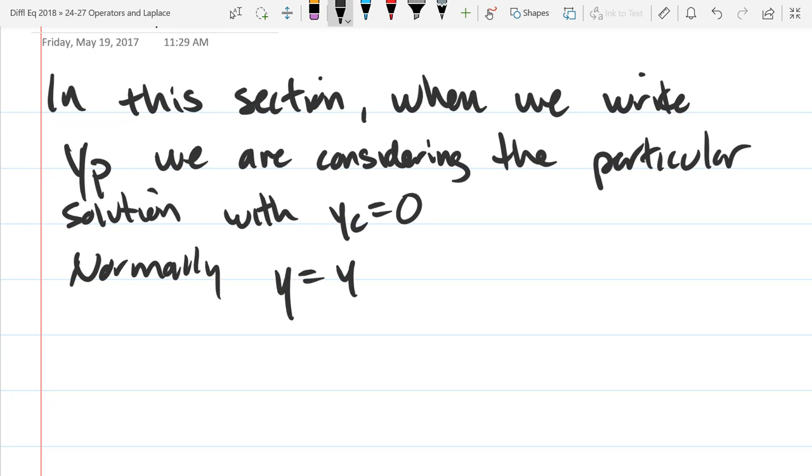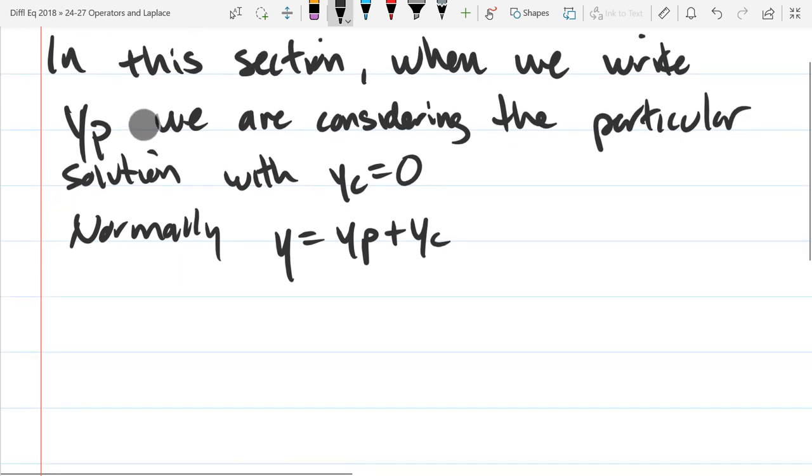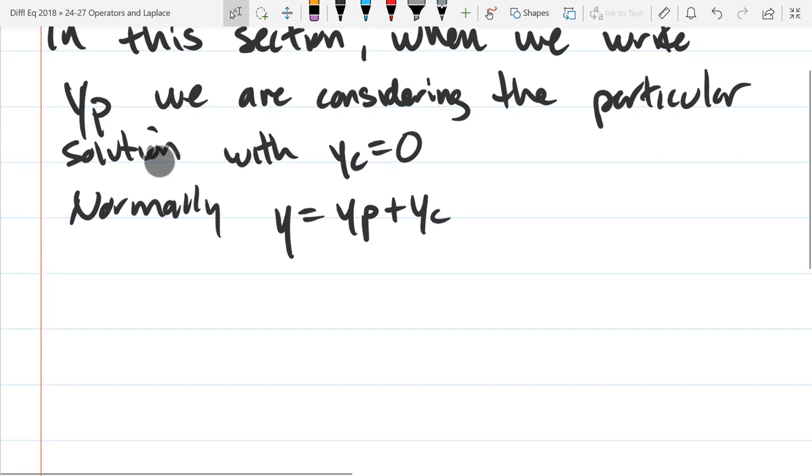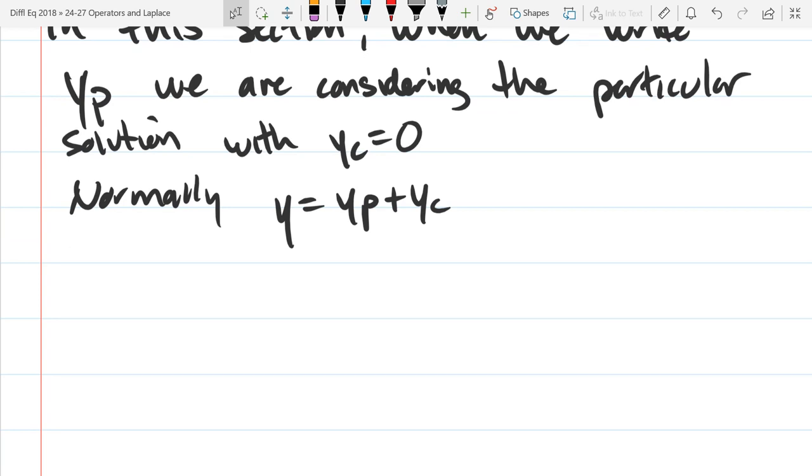Normally y is yp plus yc, the particular plus the general. So basically all of our constants will be 0. So that's going to equal 0. So it won't appear.